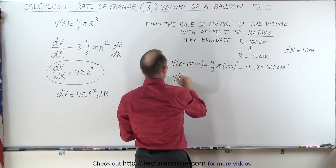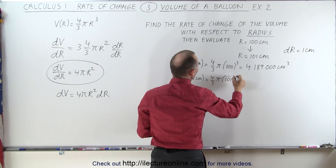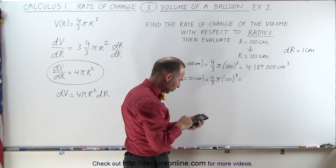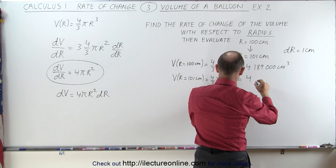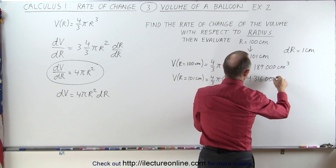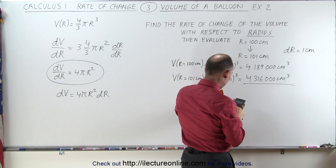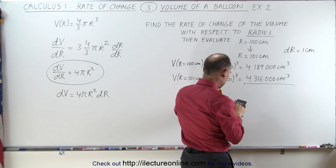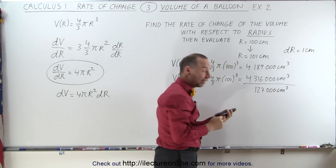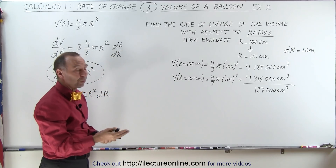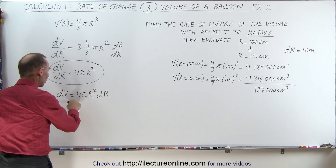That gives us approximately 4,189,000 cubic centimeters. Then we do it again: the volume when the radius is 101 centimeters is 4/3 pi times 101 cubed, and that would be 4,316,000 cubic centimeters. When we subtract the two, the difference would be 4,316,000 minus 4,189,000, so we get 127,000 cubic centimeters. That means if the radius increases from 100 to 101 centimeters, the volume increases by about 127,000 cubic centimeters.